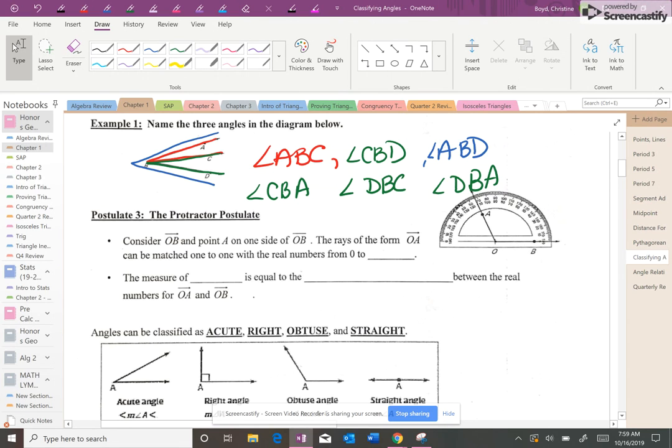Just like we had a ruler postulate where it said that every single number on a ruler could be used to measure the distance between the two numbers, you have the same thing on a protractor. So a protractor just says that if you have the two sides or the two rays, you could measure the distance in between them. So a protractor goes from the numbers 0 to 180. And in this case, the measure of angle AOB is equal to the difference between the real numbers. So this right here is at 0, and this right here is 110.